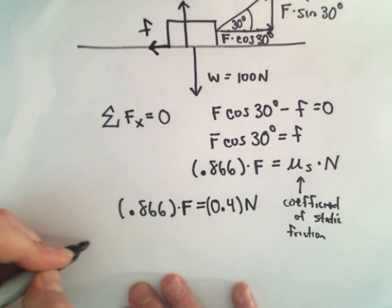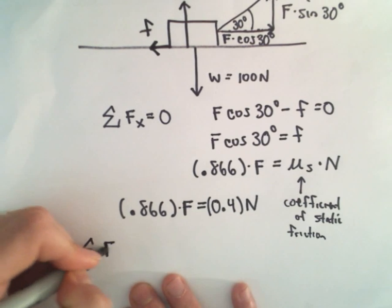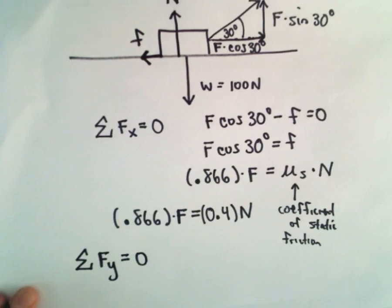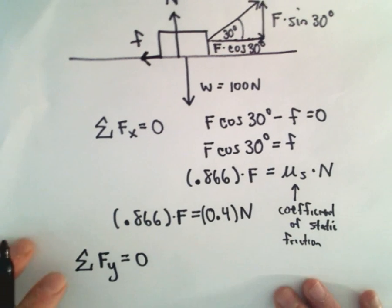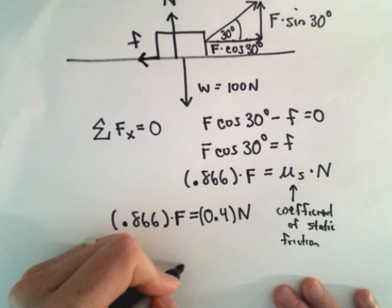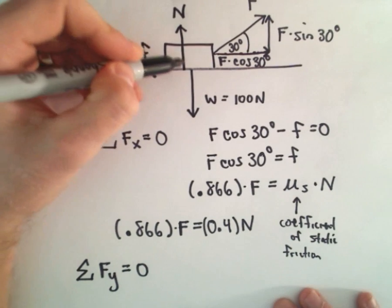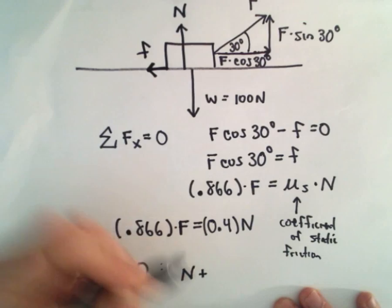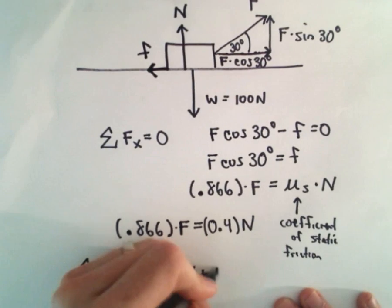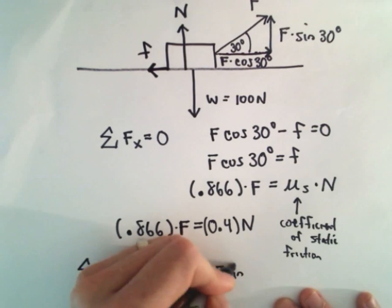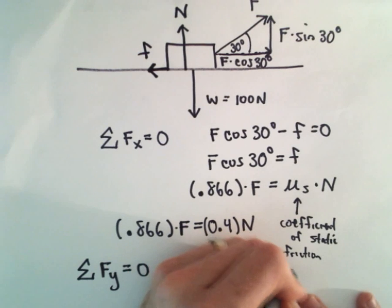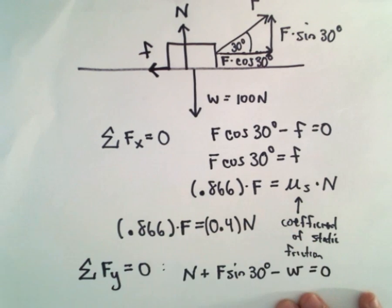But we can look at the sum of the forces acting in the y direction. If that equals 0, so right when everything's just in equilibrium, we'll get that, so acting upwards, we've got the normal vector N plus we've got this F sine theta vector. So F sine of 30 degrees, minus the weight, that's going to equal 0.